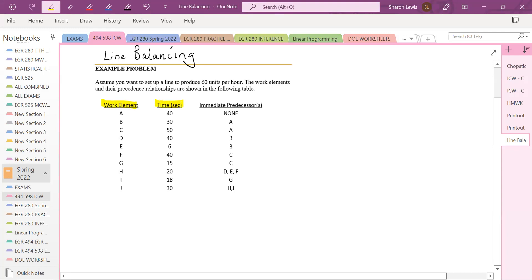The procedure has been broken down into 10 different work elements. We know how long each of those work elements take, and those are given in seconds. And we know immediate predecessors. We know the order in which the tasks need to be completed. For example, task A takes 40 seconds, and it can start whenever. There are no immediate predecessors. Tasks B and C, they cannot start until A is done. D and E cannot start until B is done, and so on.